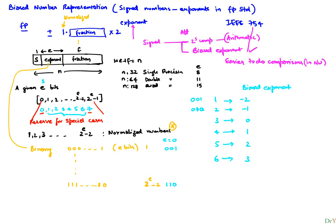In the biased representation, the actual exponent represented equals the numeric stored value minus a bias. For e equals 3, the bias is 3. IEEE defines the bias for a general e as 2 to the power of e minus 1, minus 1. In the e=3 example, that is 2^(3-1) minus 1 equals 3.